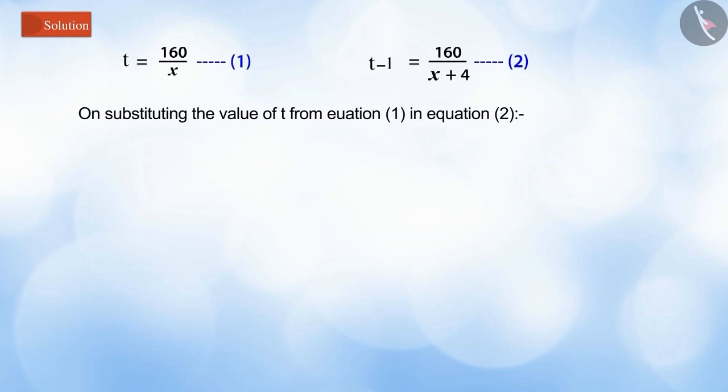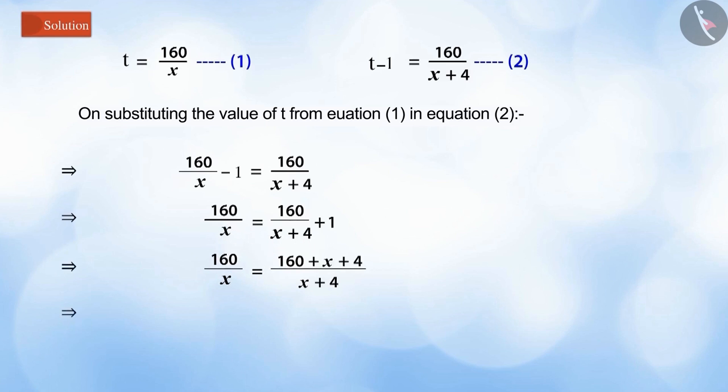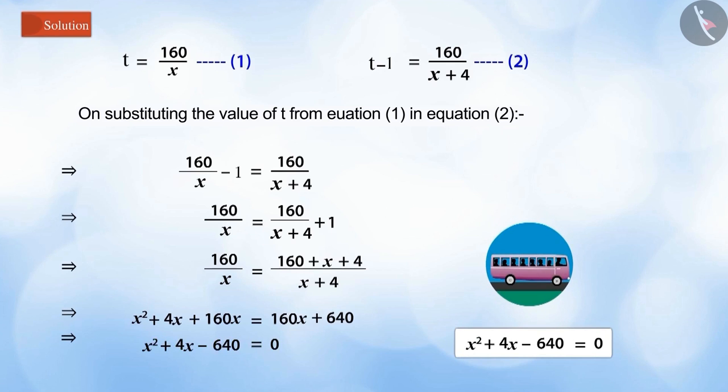Substituting the value of t from equation 1 into equation 2, we get x² + 4x - 640 = 0, which is the equation for the speed of the bus.